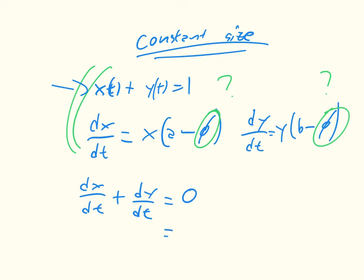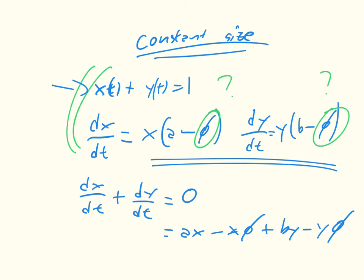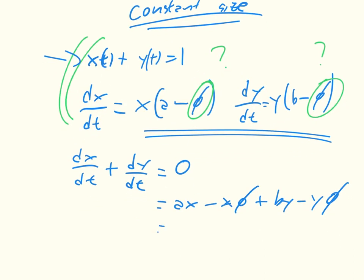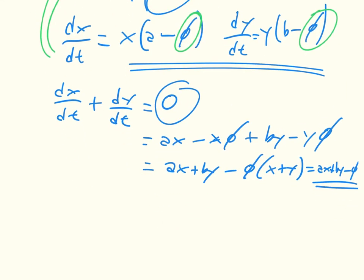So we have that 0 is going to have to be equal to ax minus x times phi plus by minus y times phi, which is just equal to ax plus by minus phi times x plus y. But remember, x plus y is 1, so it's equal to ax plus by minus phi. But because this is equal to 0, we then get that phi is equal to ax plus by.